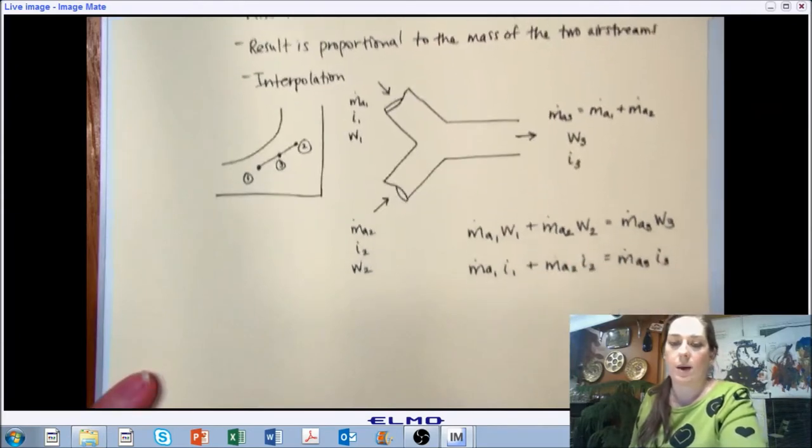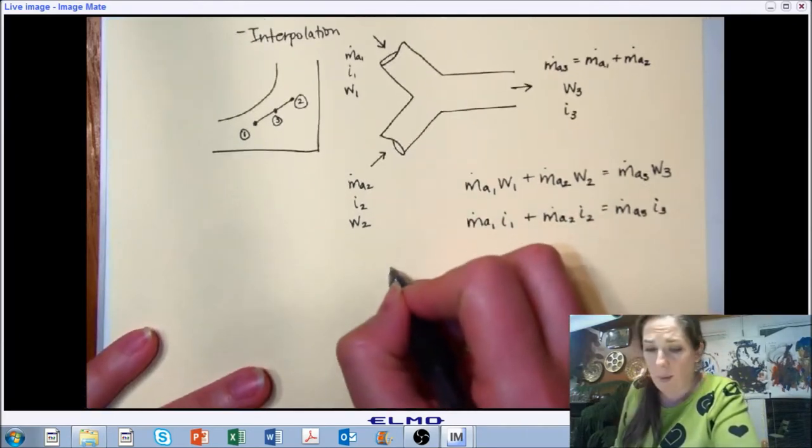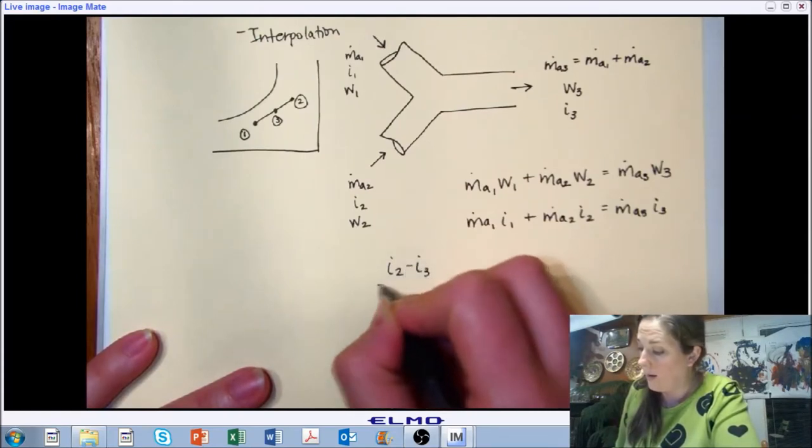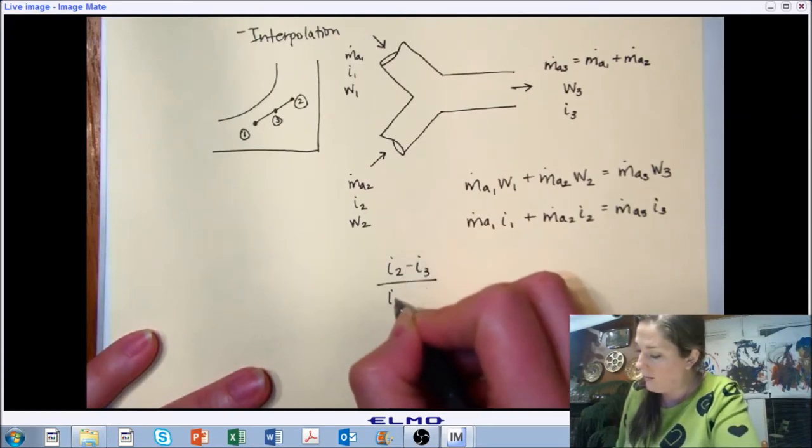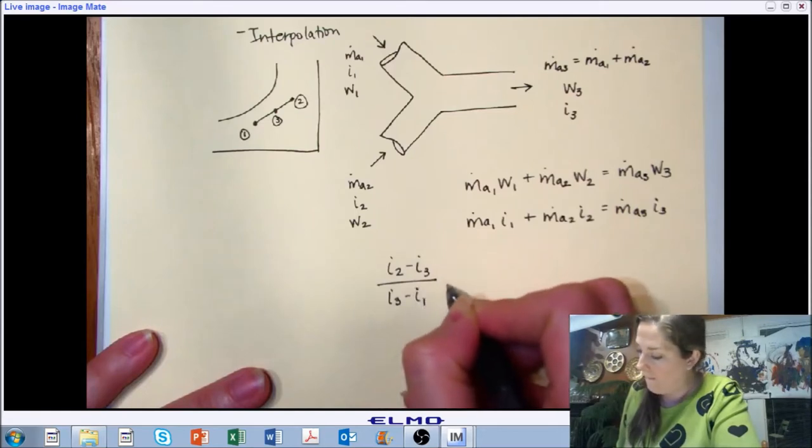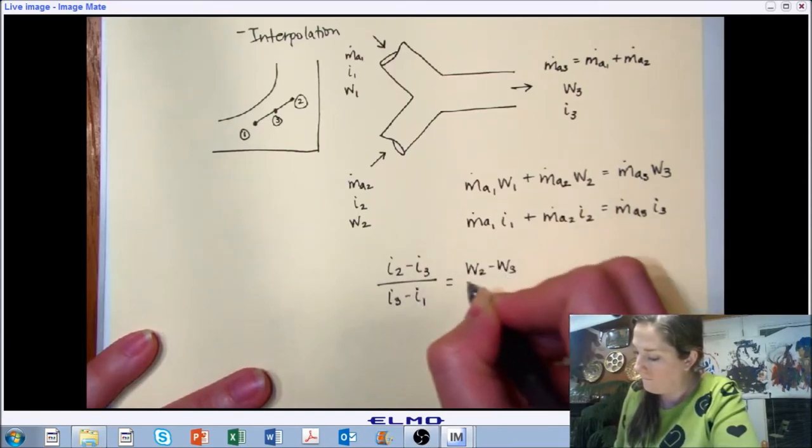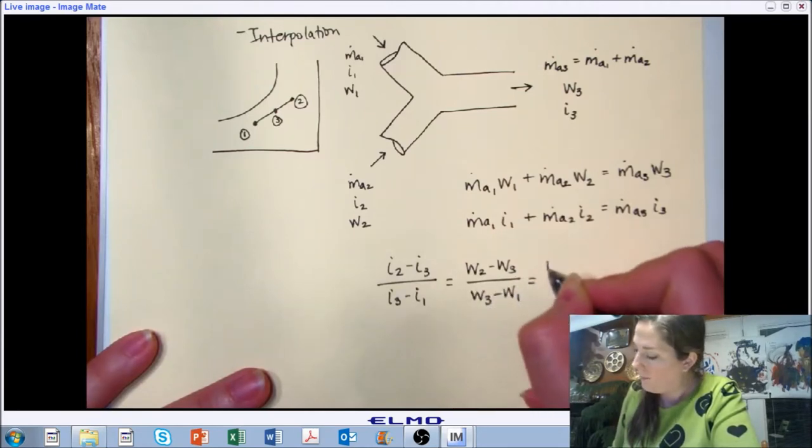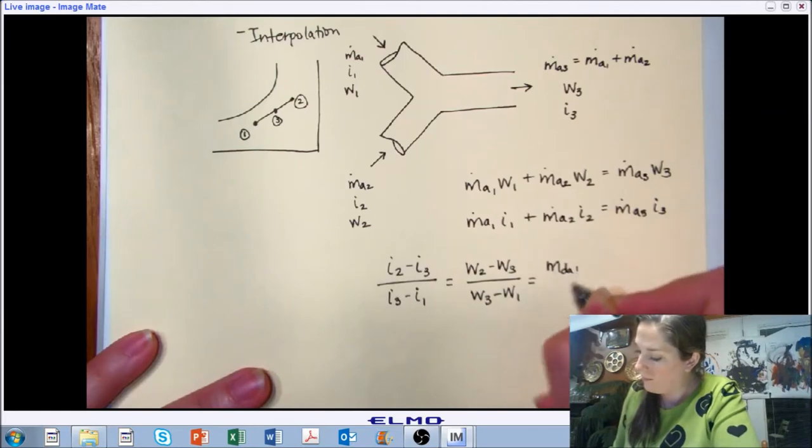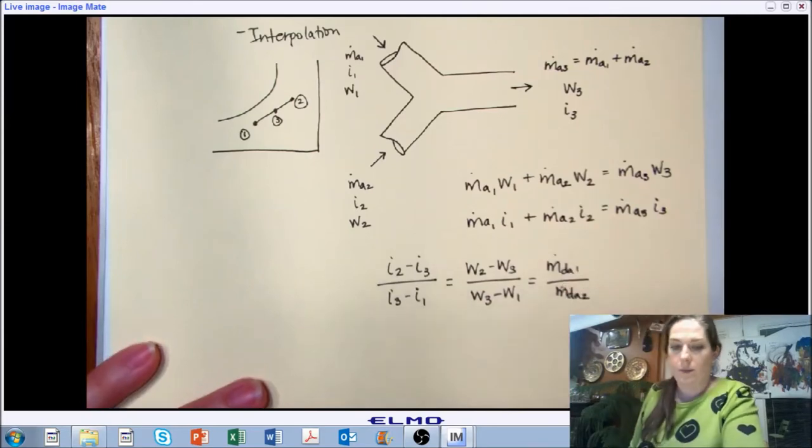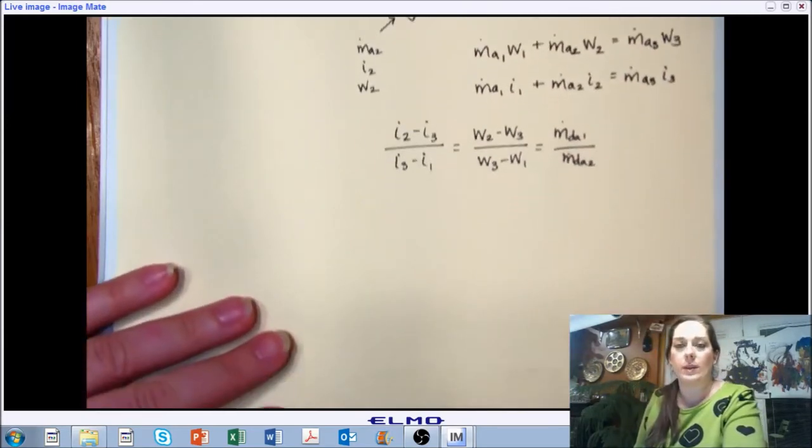So conservation of energy, conservation of mass. And then we can combine these in order to have our proportional equations that help us solve for whatever our unknown is. Now let's work through an example of this.